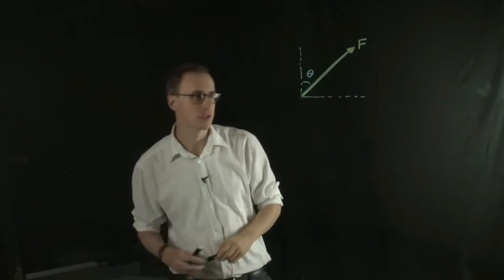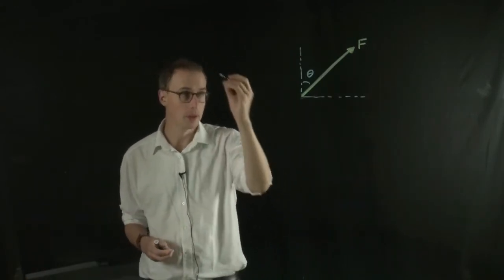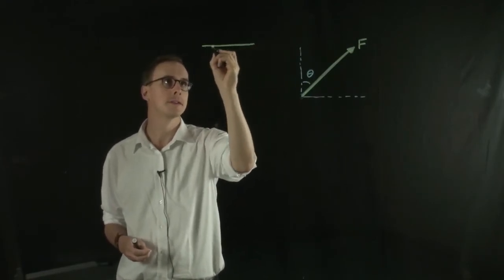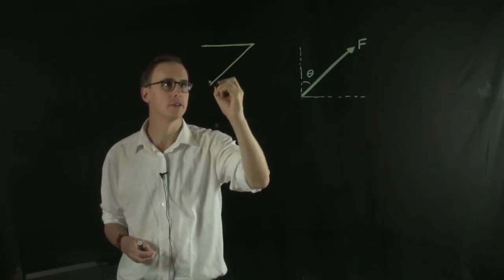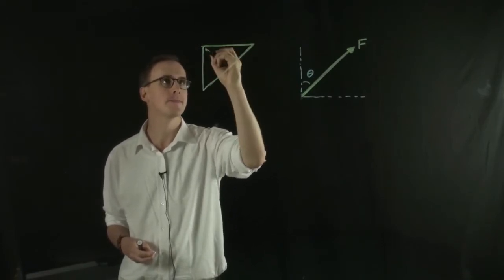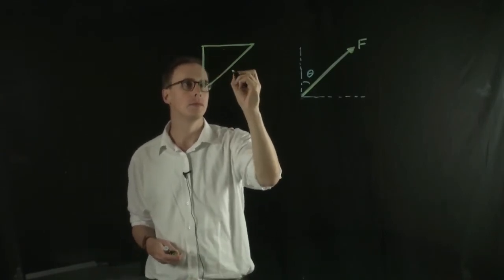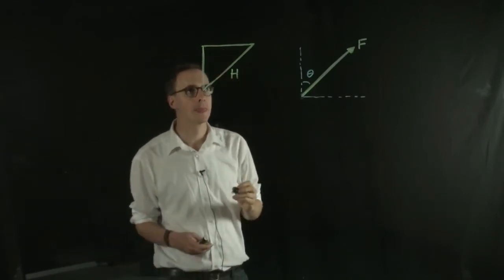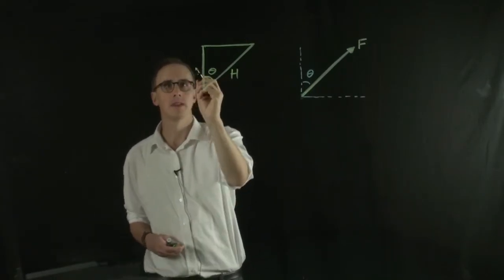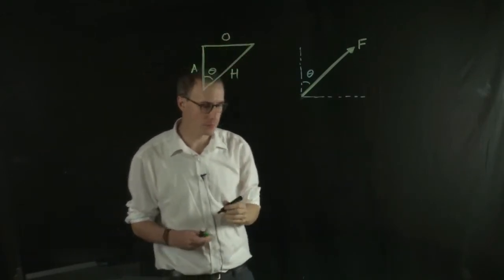So the trig functions, if you remember, if I assume my force is the hypotenuse of a right-angled triangle, and this is the angle I'm interested in, theta. Then this side is the adjacent and this side is the opposite. And the trig functions are, of course...